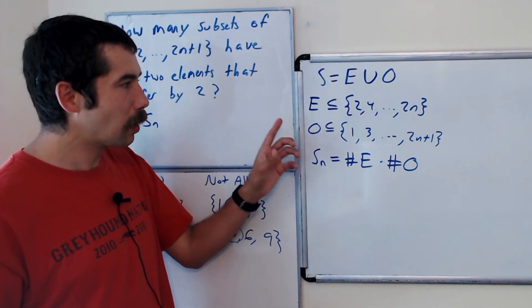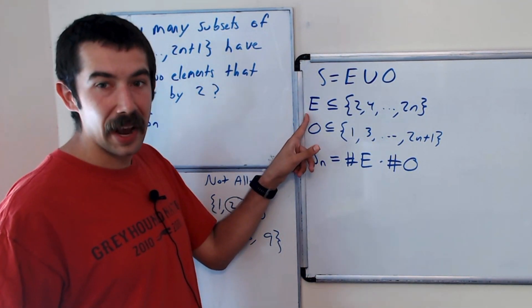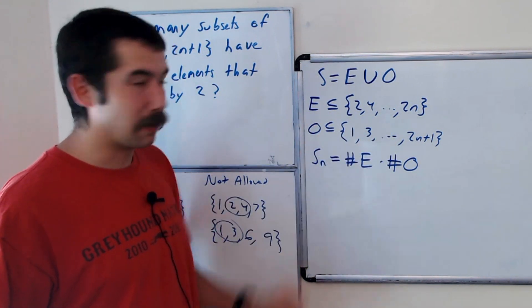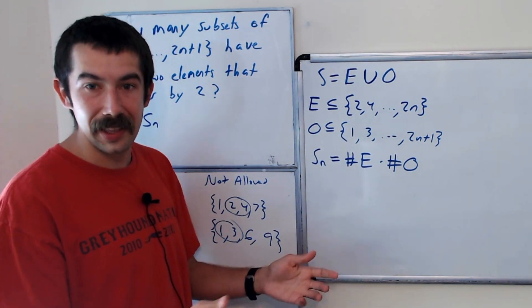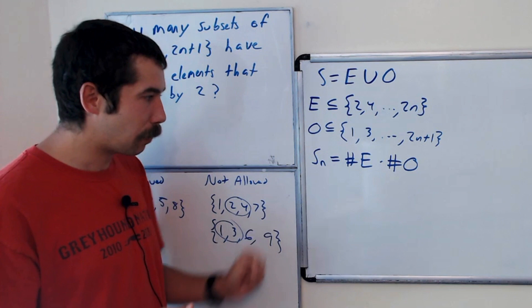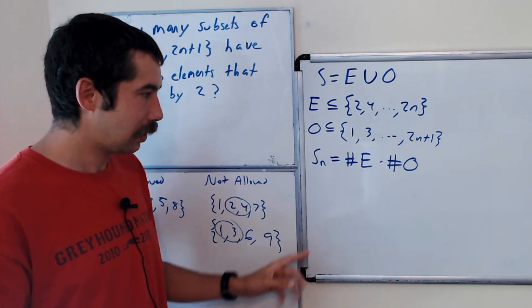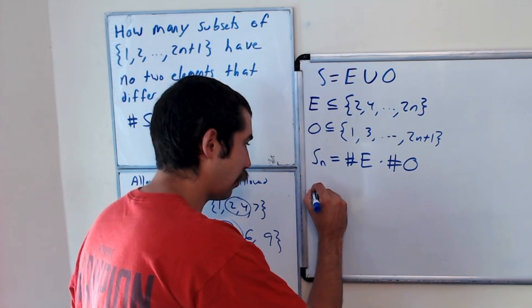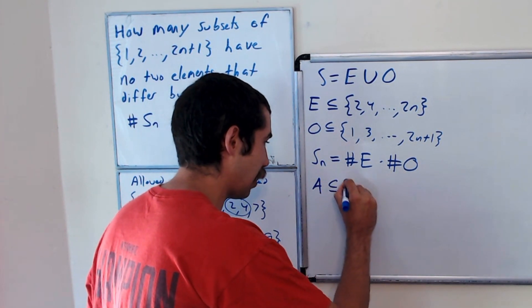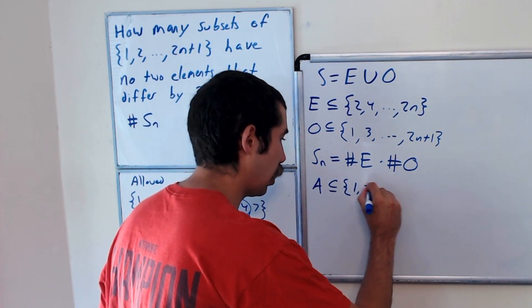Okay, and so what we're going to do is instead of looking at even subsets of 2N that avoid being two apart, let's divide each term here, and let's look at a different set, A, which will be a subset of the numbers 1 through N.